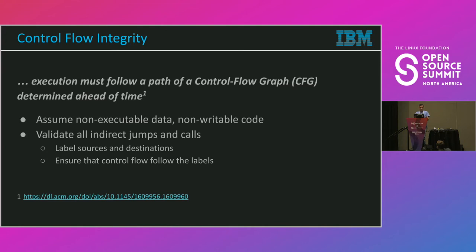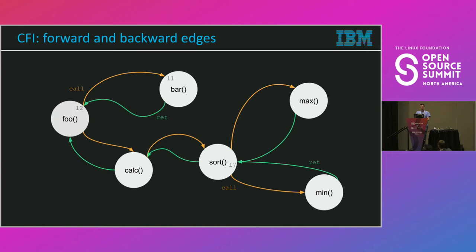CFI has several assumptions: non-executable code, non-executable data, and non-writable code — which is W^X or XO. With these assumptions, they suggested validating all indirect jumps and calls by labeling sources of jumps, calls, and returns, and their destinations, and adding instrumentation to each program that will check whenever a jump is executed that it matches the label the compiler thought it should jump to. For instance, if we call bar from foo, at the call site in foo we have to compare that the actual target of the call is L1. And when we return from bar to foo, we have to compare at the call site of RET that the actual return address will be L2.